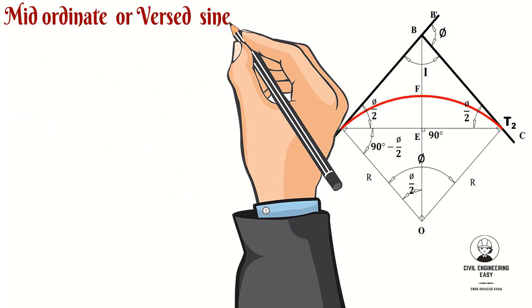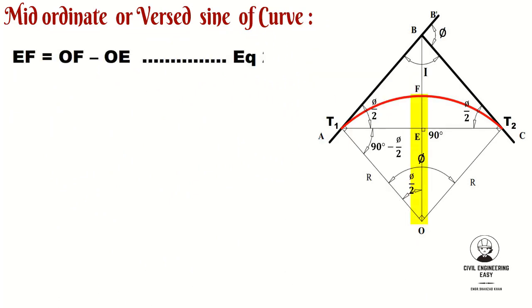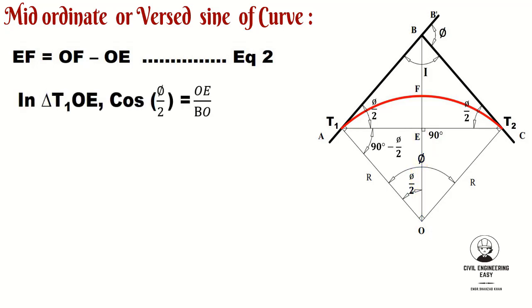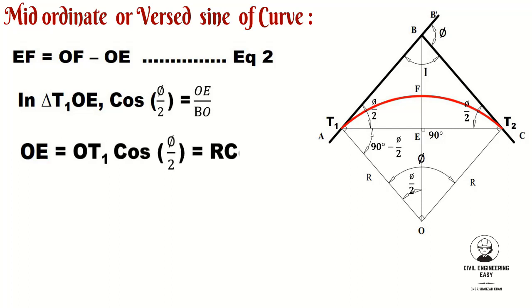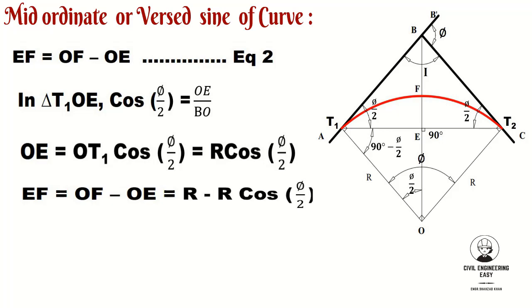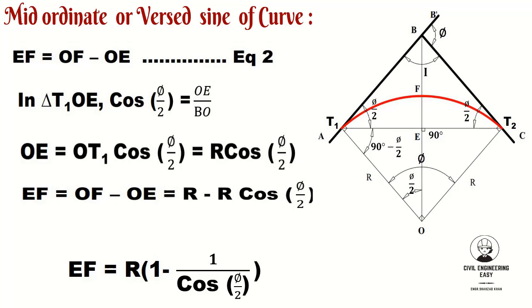Mid-ordinate or versed sine of curve EF: EF equals OF minus OE. Consider the triangle T1OE; cos(φ/2) equals OE divided by OT1. Therefore OE equals OT1·cos(φ/2). Since OT1 equals R, OE equals R·cos(φ/2). Substituting into the equation: EF equals R minus R·cos(φ/2). Taking R as common: EF equals R·(1 − cos(φ/2)).